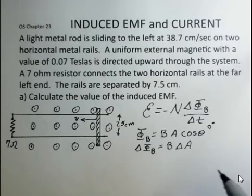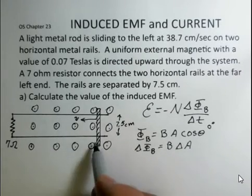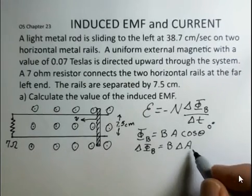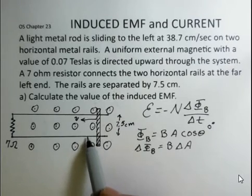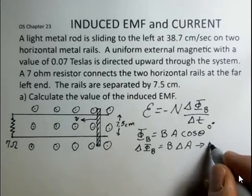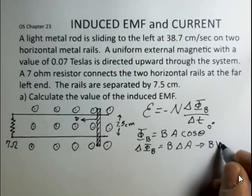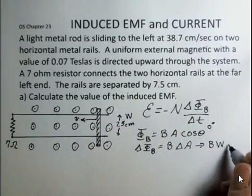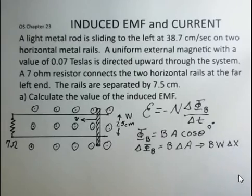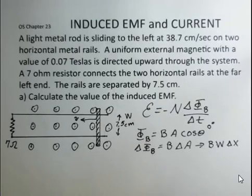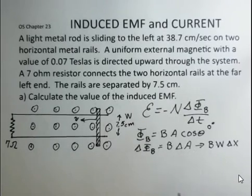And we can calculate area, of course, with length times width. Delta area would be how the length is changing, delta x, let's call it, times width. So this could be rewritten as B times W for the width, the 7.5 centimeters, and then delta x for how much the rod advances to the left. That's going to be the decrease in the area, the delta area.